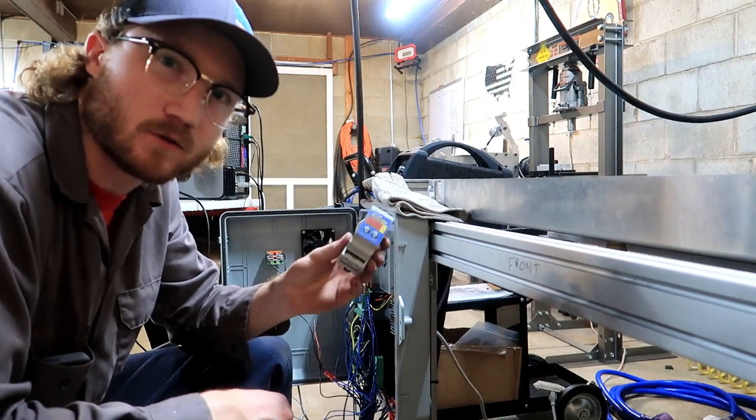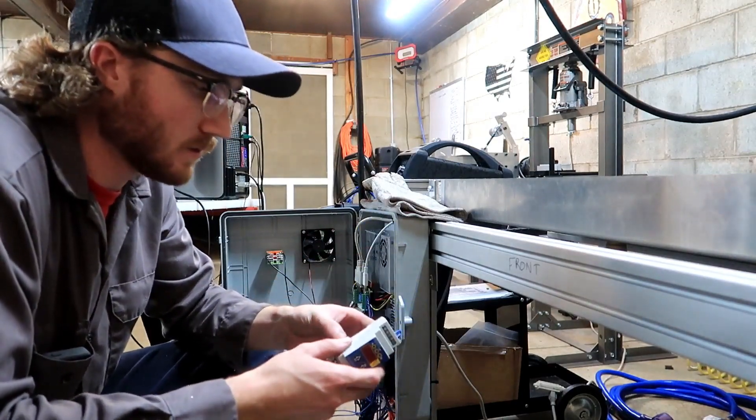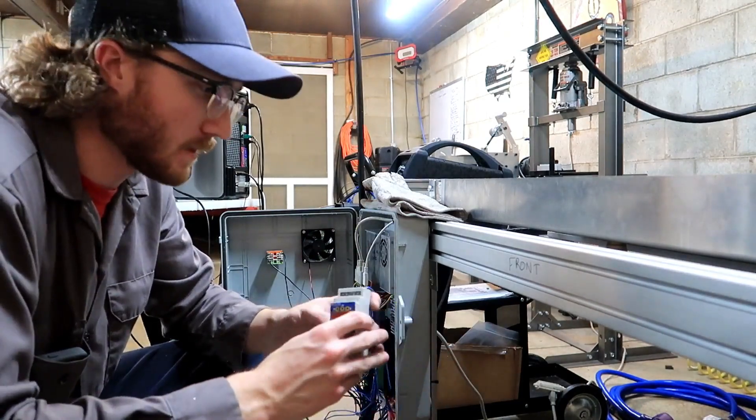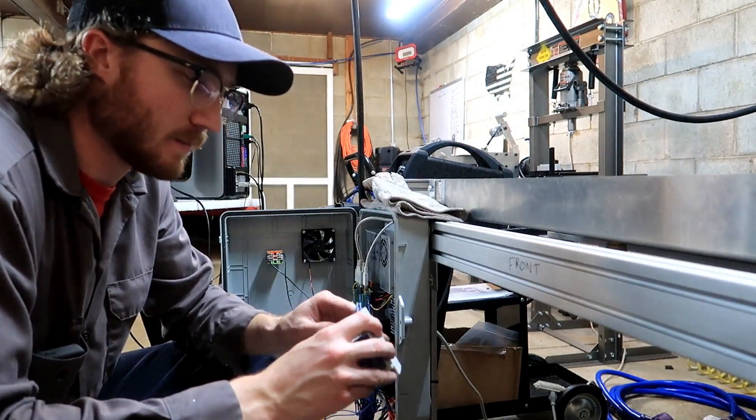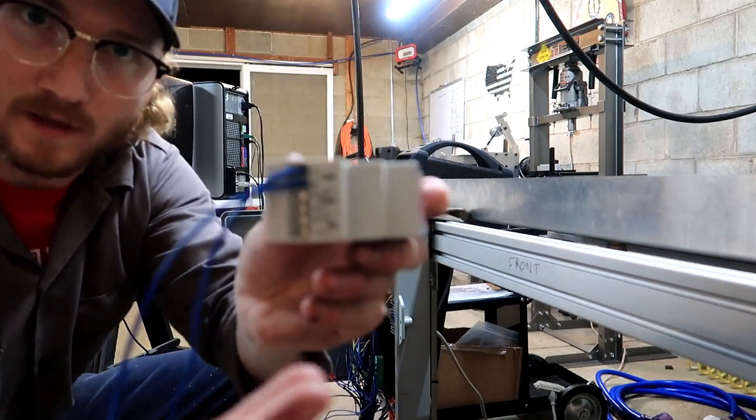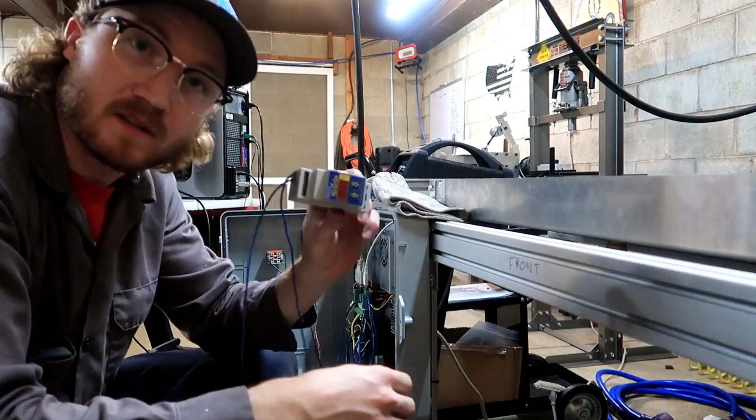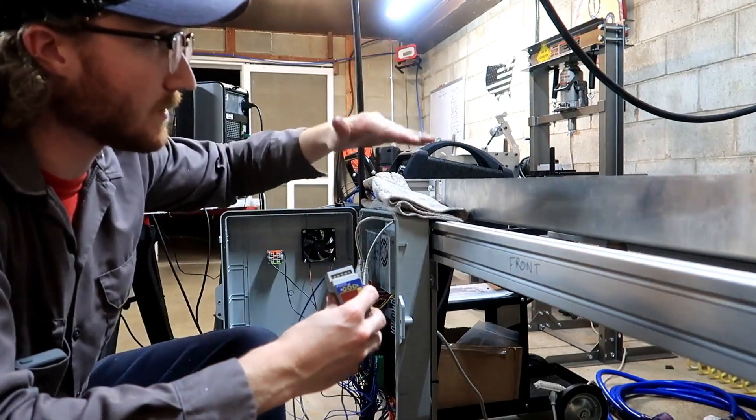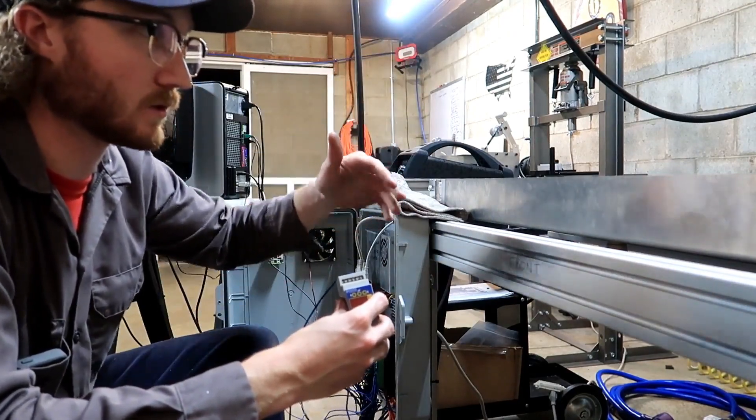This thing right here, that's the new torch height controller. It may look exactly the same as the other one, but this one has step and direction inputs and outputs. This thing directly sends the signals to the z-axis up and down to tell it whether to go up or down based on the voltage it's getting from the plasma cutter.